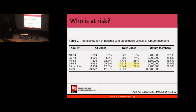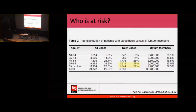Moving on to the next question: who is at risk? I wanted to share just one piece of data. This is a very recent, large study that took place here in the US — Dan Culver from the Cleveland Clinic was part of this study. It caused a significant change in how people thought about sarcoidosis. We used to think it was a disease of very young people — 20, 30, 40 years old. But this study showed that in the US, most new cases of sarcoidosis are happening in patients who are 55 years or older.